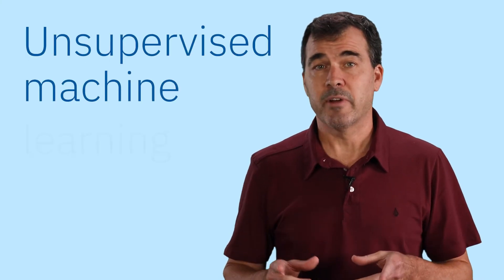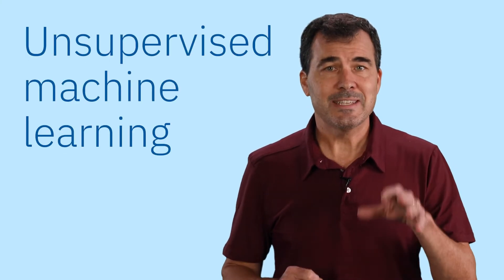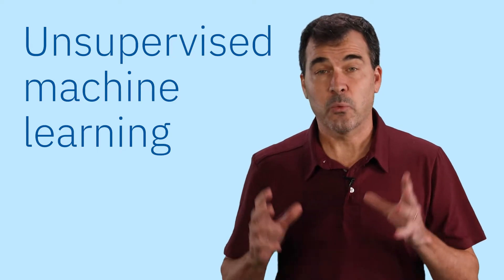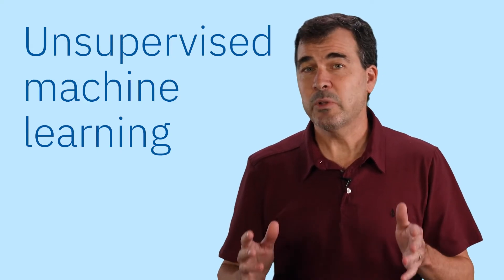Let's take a look at unsupervised machine learning. Remember, this is the approach that learns from a data set without labels. Instead, we look for patterns in the data. There are three main types of unsupervised learning.